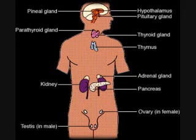Glucagon. Gland: Pancreas. Function: to increase blood glucose levels by stimulating the liver to break down glycogen into glucose.